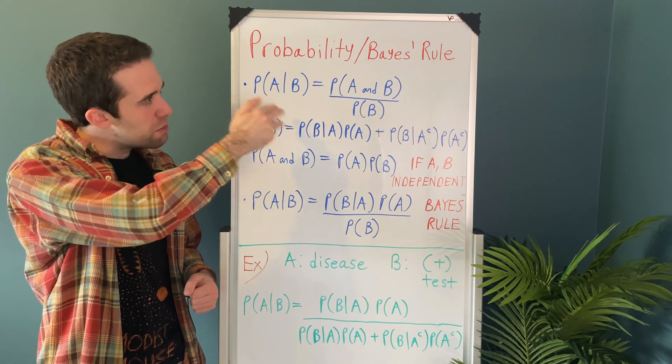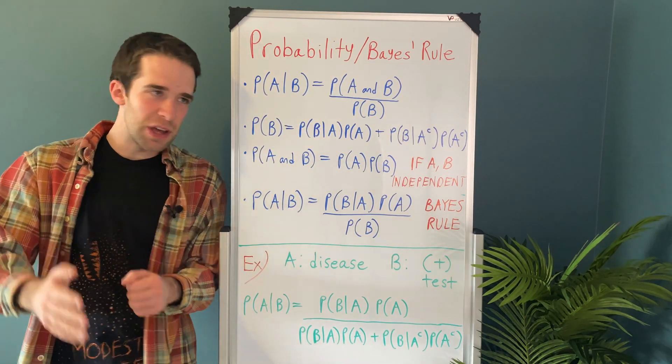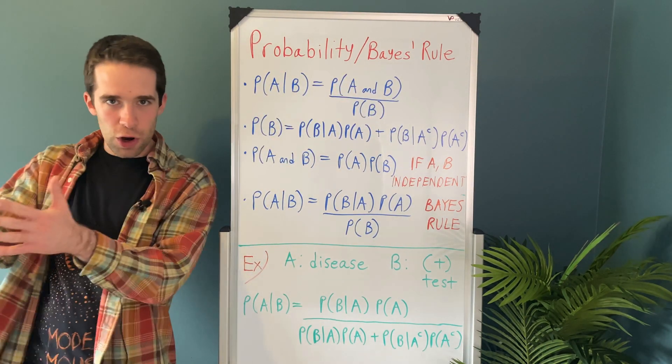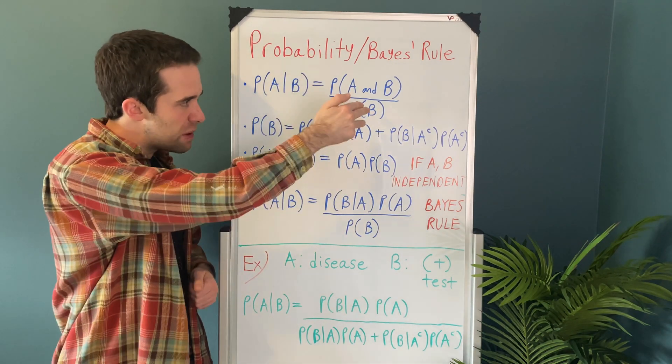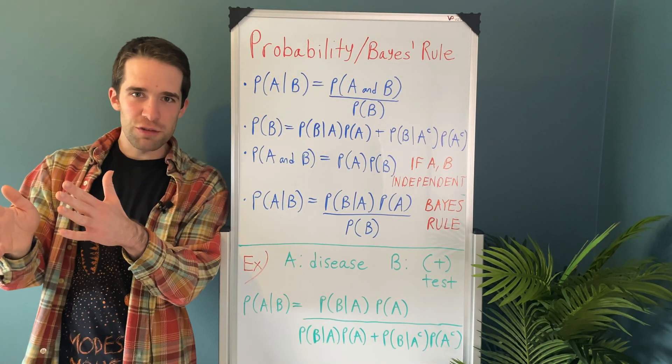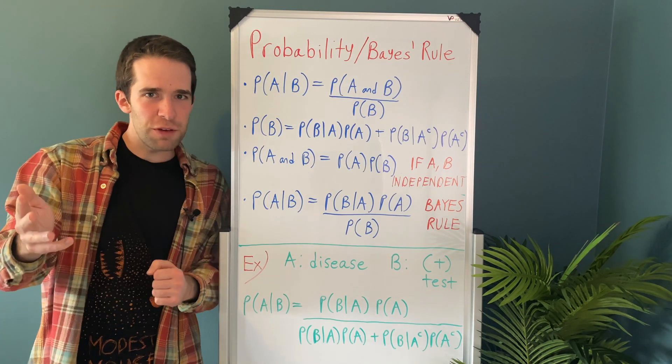So the probability of A given B is equal to the probability of A and B both occurring divided by just the probability of B occurring. That's the definition of conditional probability. Pretty straightforward, right?